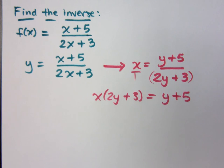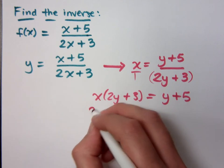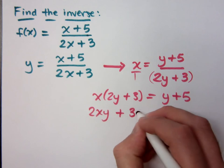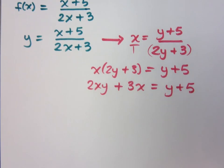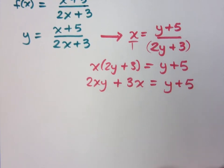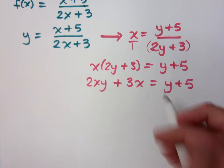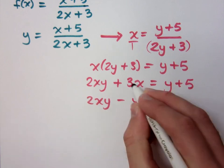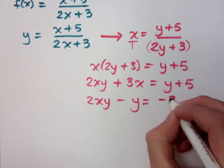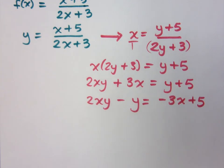Keep in mind you're trying to solve for y. That means anything with a y term needs to go on one side and everything else goes to the other side. When I multiply this out, I have 2xy plus 3x equals y plus 5. So I'm going to move the y over: I've got 2xy minus y, and move the 3x to the right — negative 3x plus 5. That step is just using the addition property of equality.